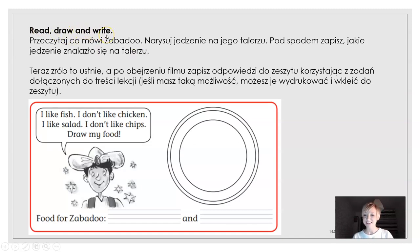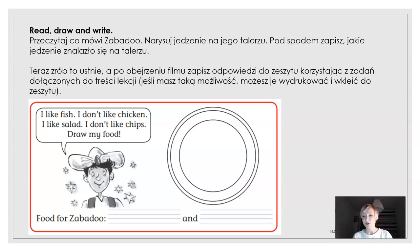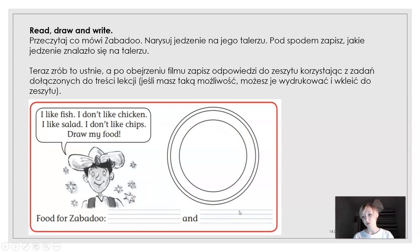Read, draw and write. Przeczytaj — co mówi Zabadu? Następnie, na podstawie tego co on tutaj nam powiedział, narysuj jedzenie na jego talerzu. Na talerzu rysujemy tylko to, co Zabadu lubi — czyli tylko to, co zaakceptowałby na tym swoim talerzu. Pod spodem — food for Zabadu, jedzenie dla Zabadu — napiszcie, co możemy mu na tym talerzu zaserwować. Zatrzymujemy nagranie — zróbcie to ustnie, głośno i wyraźnie przeczytajcie ten tekst, powiedzcie sobie co narysowalibyście i co należałoby wpisać. A później robicie to do zeszytu.